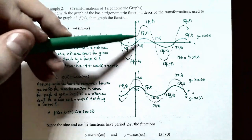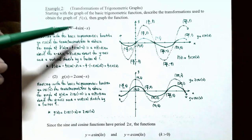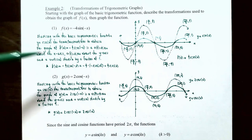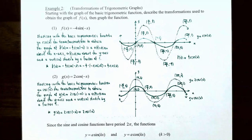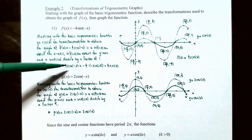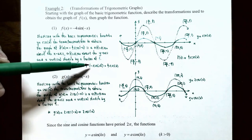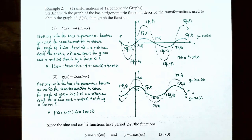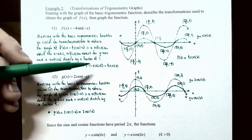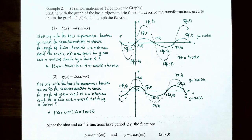Notice that f(x) = −4sin(−x) can be simplified using the odd function property of sine: −4·sin(−x) = −4·(−sin(x)) = 4sin(x). So the combined effect of reflecting about the x-axis, reflecting about the y-axis, and stretching by 4 is equivalent to just a vertical stretch by a factor of 4 applied to y = sin(x).